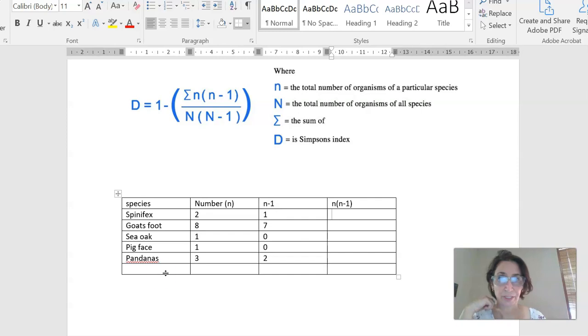This next column here, which is n bracket n minus 1, that's this column that we're working on here, is just this n column multiplied by this n minus 1 column. So I'm going to take this number here, 2, multiply it by this number here, 1, and 2 times 1 is 2. Next one's a little bit interesting. We've got 8 times 7 is 56, 1 times 0 is 0, 1 times 0 is 0, and 3 times 2 is 6.